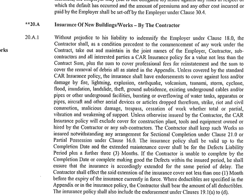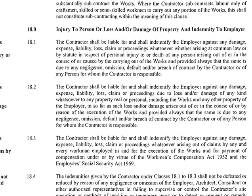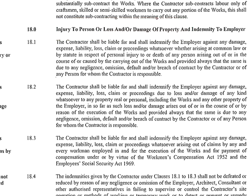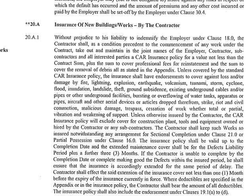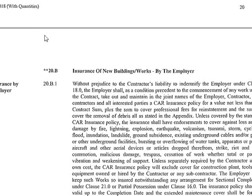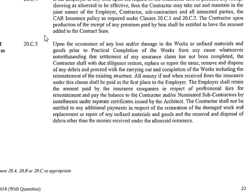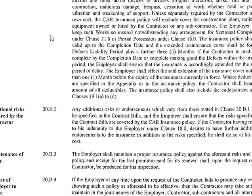Clause 20 of the PAM contract 2018 is about insurance. This is an extension to Clause 18, related to the liability of the contractor to the employer in terms of injuries to persons or loss and damage of property. We know that there is a need for contractors to have insurance to cover those. Clause 20 is rather long, with quite a number of clauses; refer to the PAM contract 2018 for the full text.